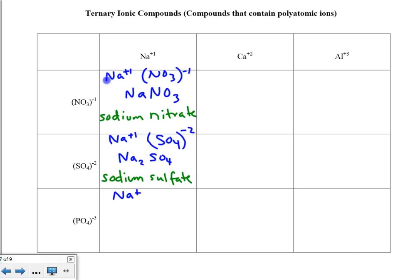Next example: sodium and phosphate, which is a minus 3. Crisscrossing, the formula becomes Na₃PO₄. I'll need three of those sodiums to match up with the 1 phosphate because it's a minus 3. The parentheses are dropped. The name of this substance is sodium phosphate.